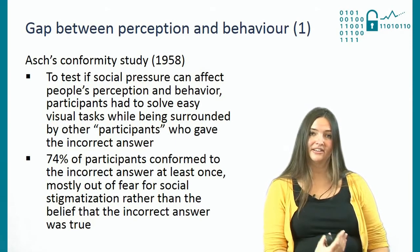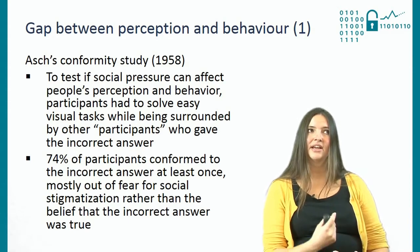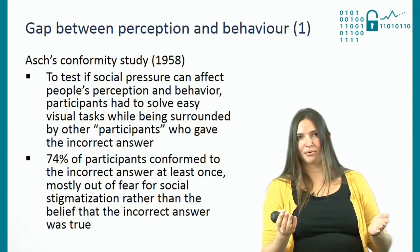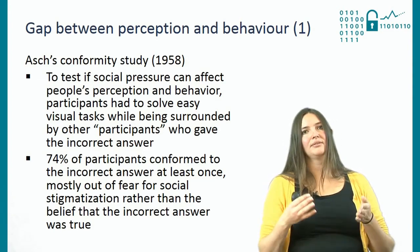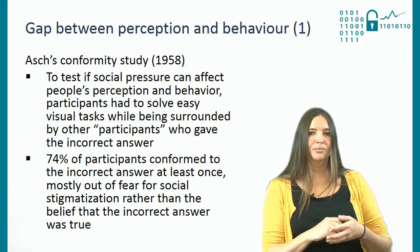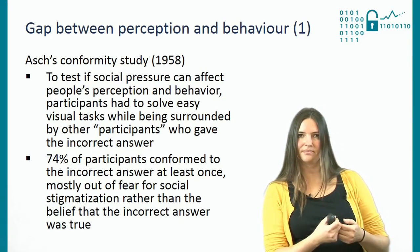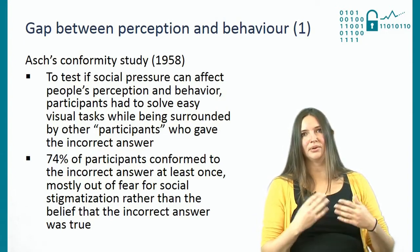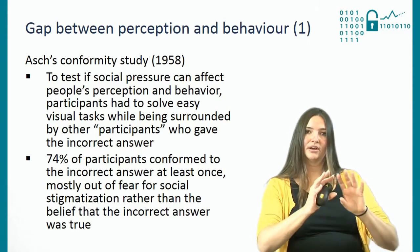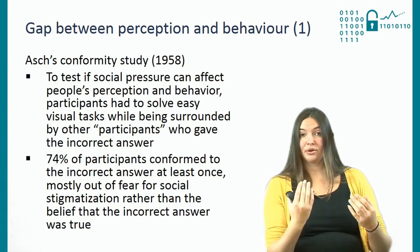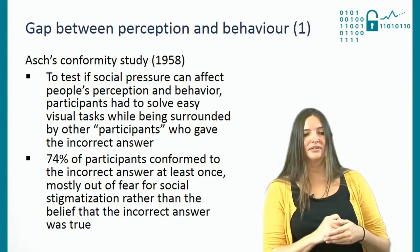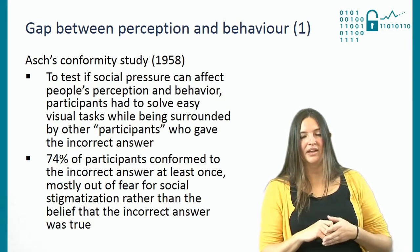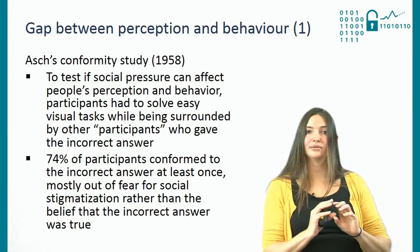The first example is by Asch in 1958 — a conformity study to find out how people conform under social pressure. A participant sat at a table with others who they believed were also participants, but were actually confederates — helpers of the experimenter. The participant had to solve very easy tasks that everyone could answer. Asch was interested to see what happens when other people give the wrong answer. What he found is that 74% — almost three quarters — conformed at least once to an incorrect answer because other people were giving that answer, not because they thought it was correct, but because they feared social stigmatization.